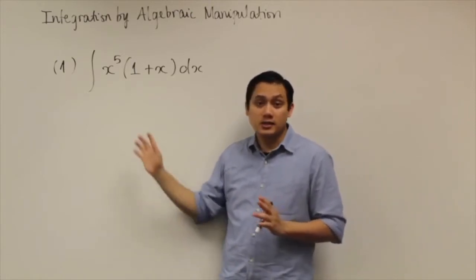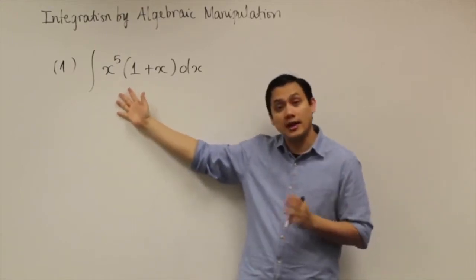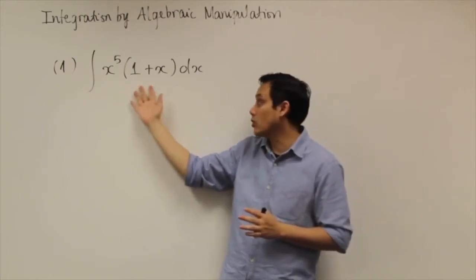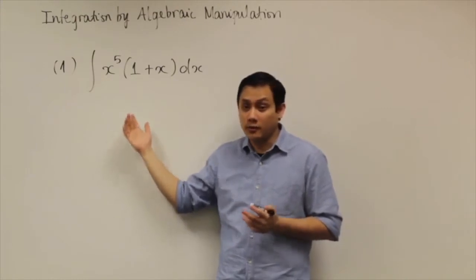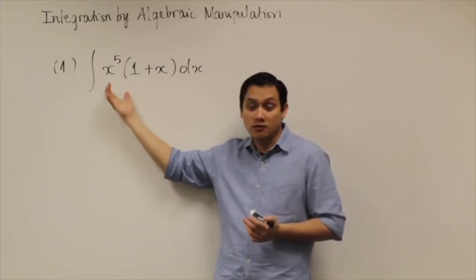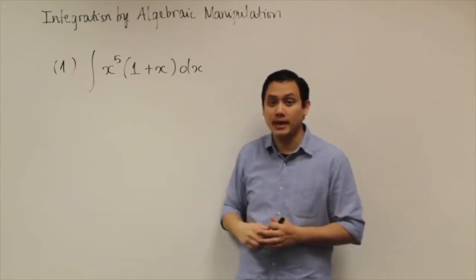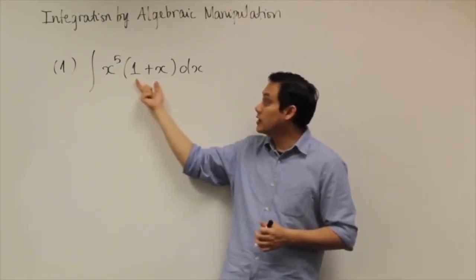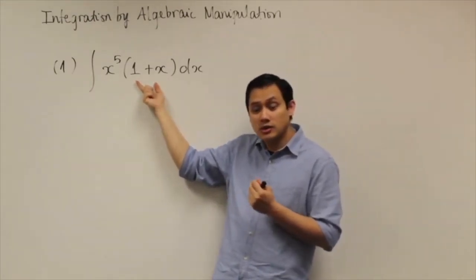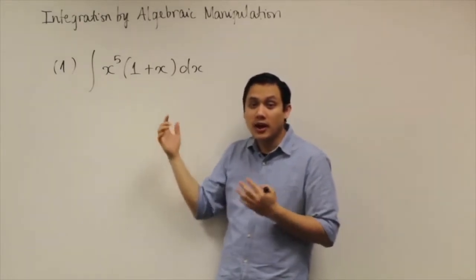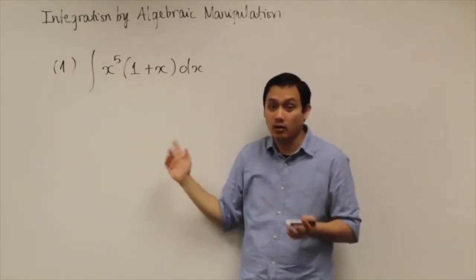Another way to look at this problem is that, for example, we have the integral of x to the fifth power times (1 plus x) dx. You cannot use any standard formula for the anti-derivative to solve this indefinite integral. You cannot use substitution because if you identify the inside function and take its derivative, you don't get anything related to x to the fifth dx at all.